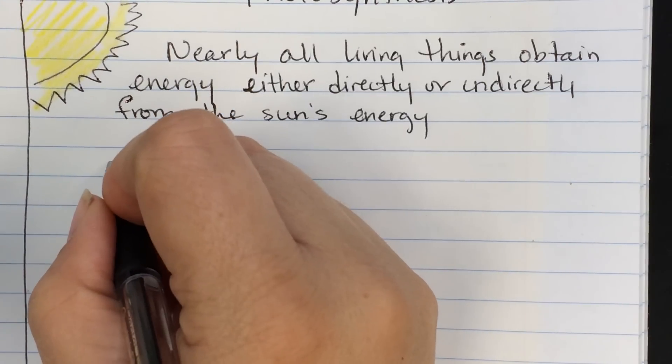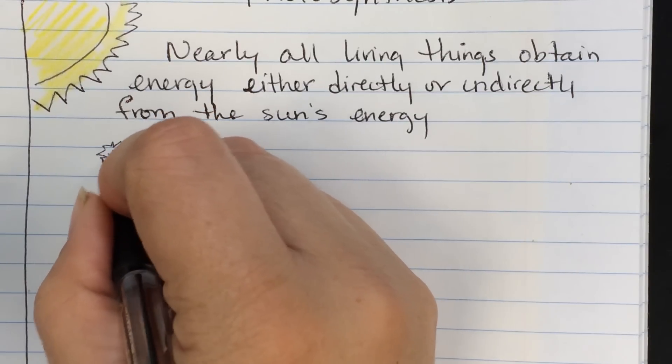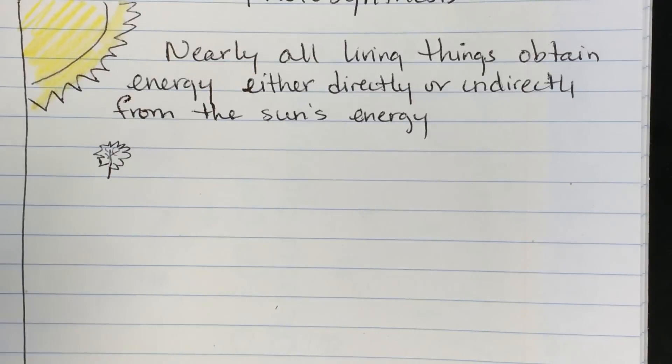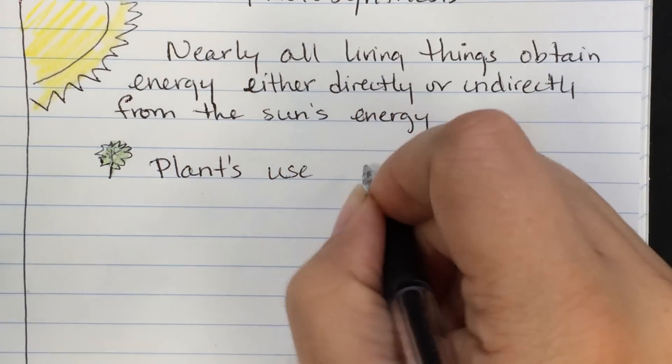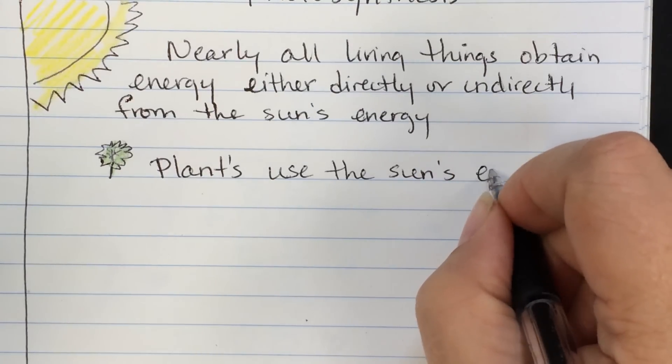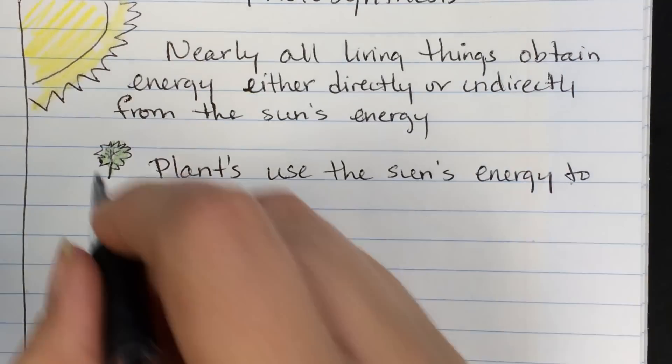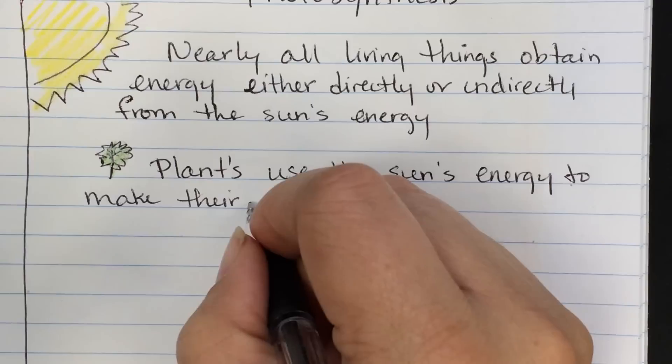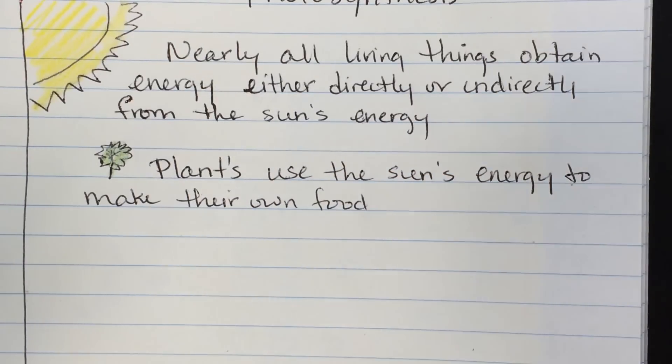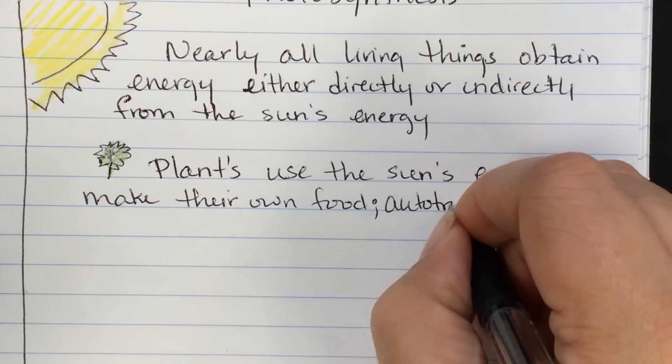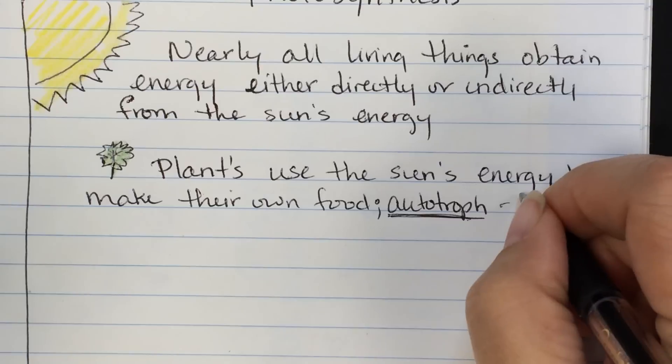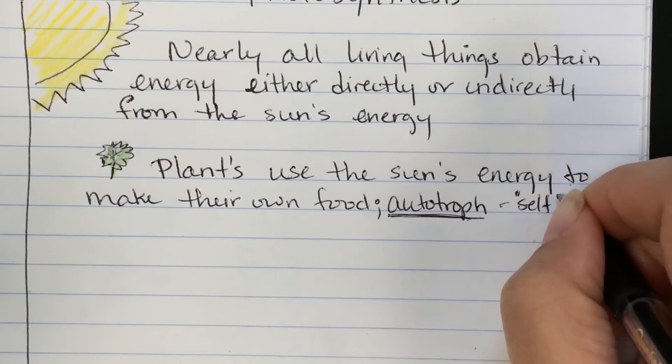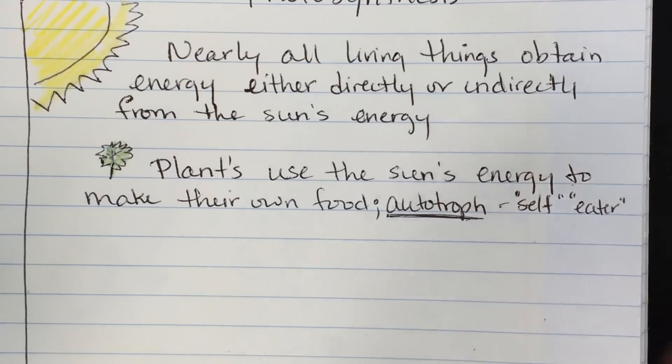Plants help us out quite a bit. So let's draw a cool little plant leaf. Do some little veins on there. And again, if you feel colorful today, by all means, go ahead and add a little bit of sparkle to your notes. So we want our pretty green leaf here. Plants use the sun's energy to make their own food. This is known as an autotroph. And to break it down a little bit, the general meaning is self-eater. Auto being self, trof being eater.